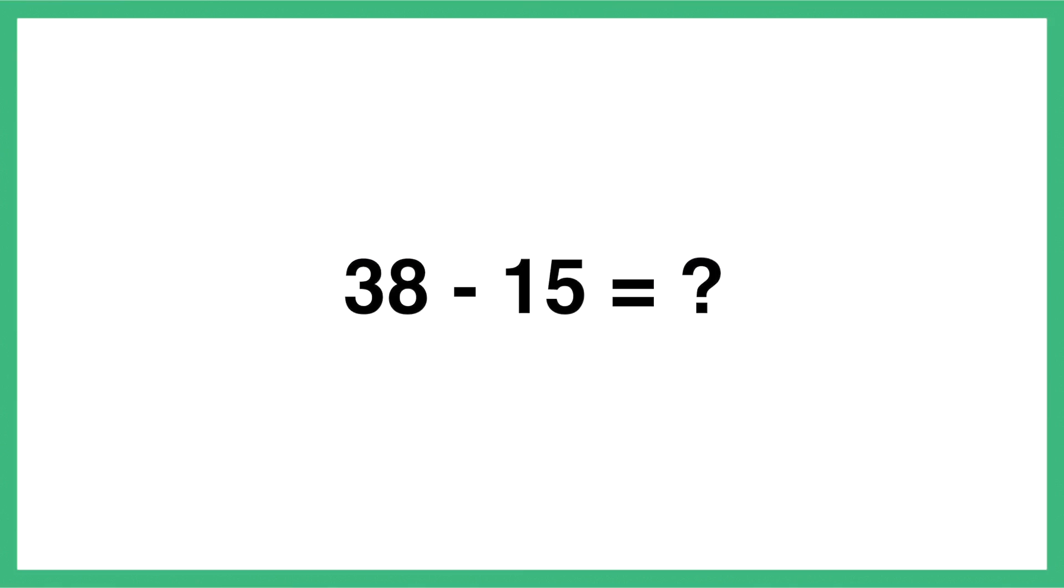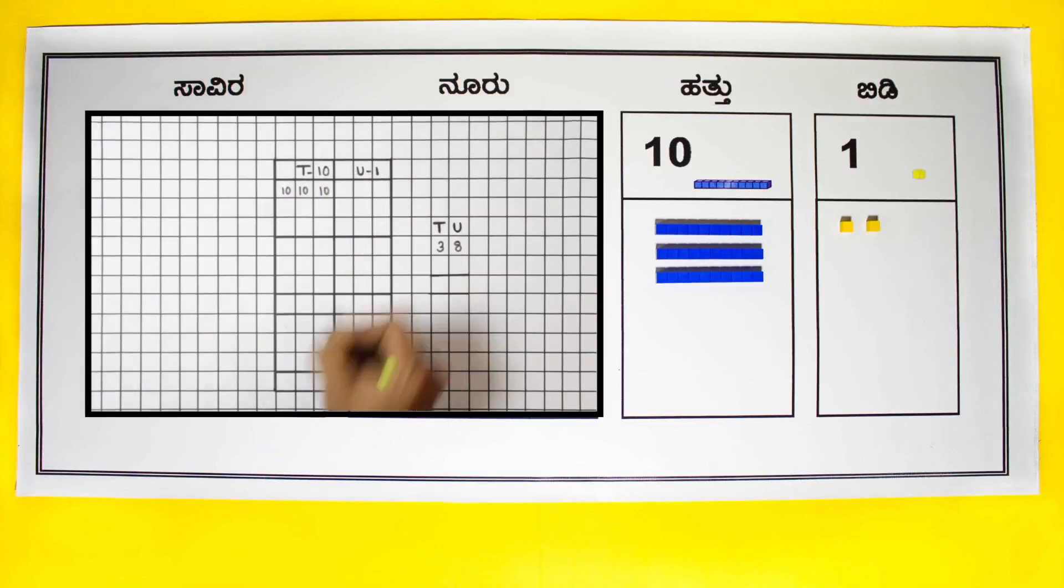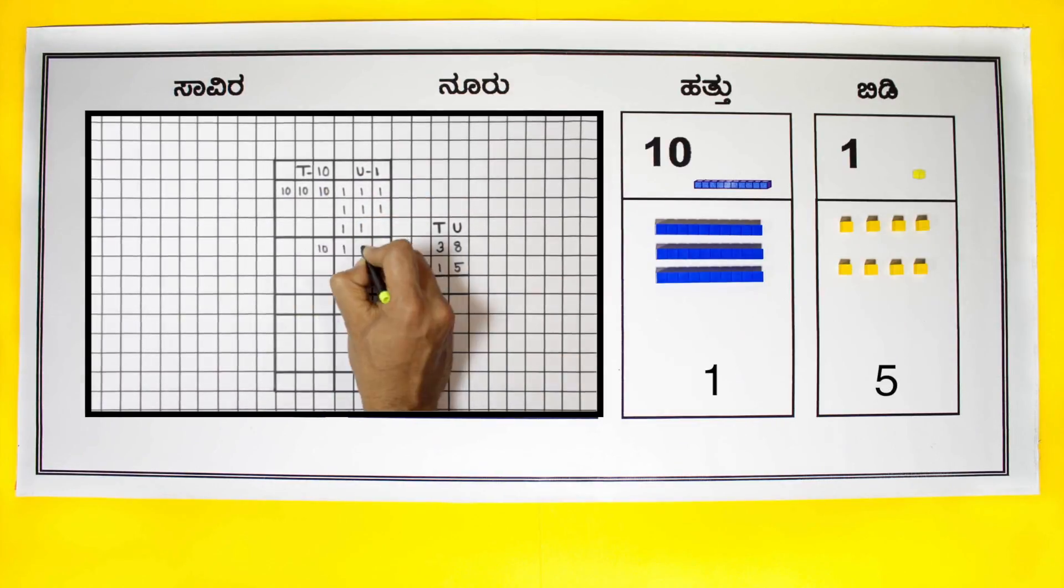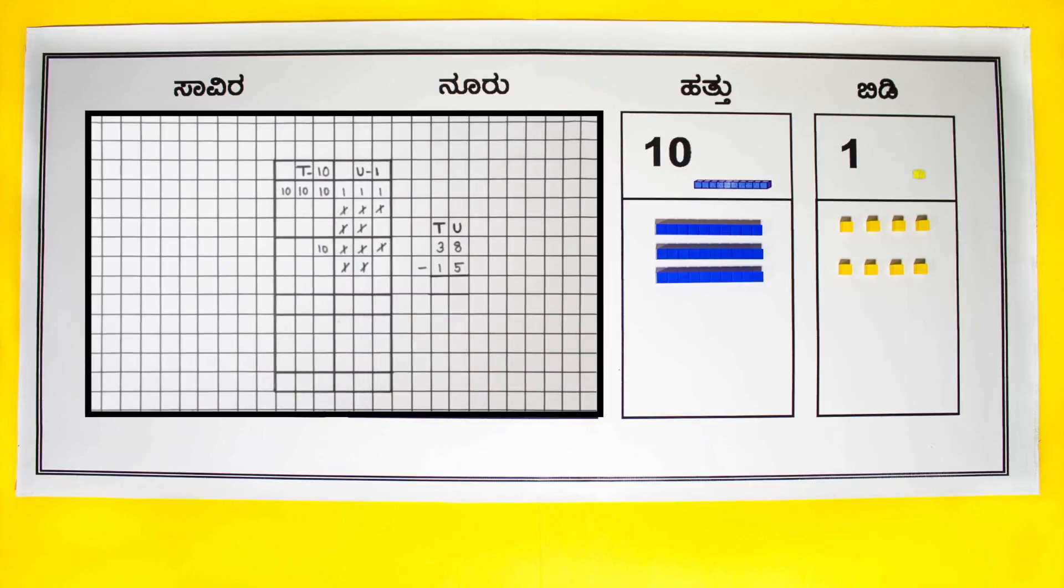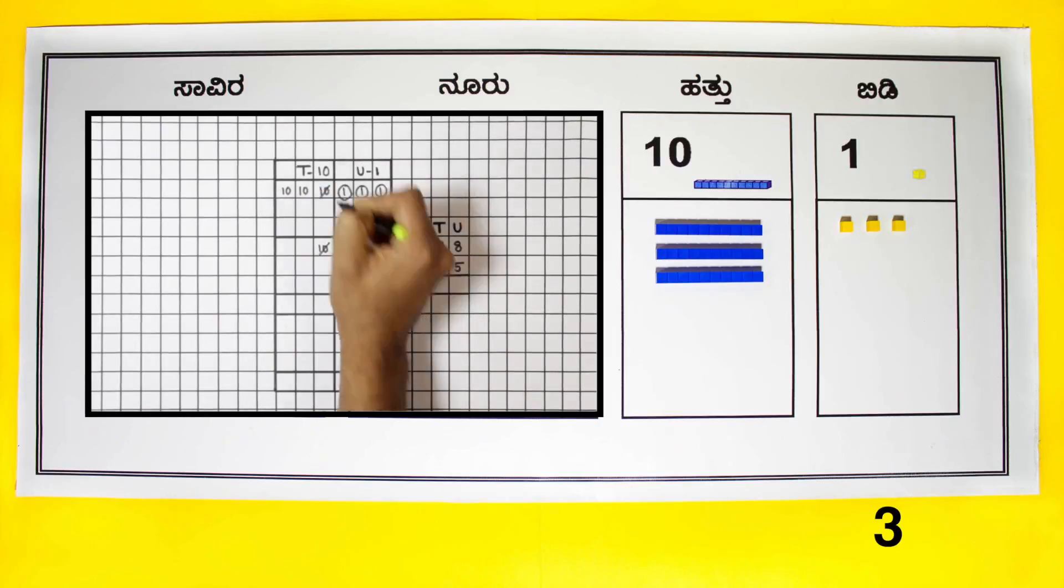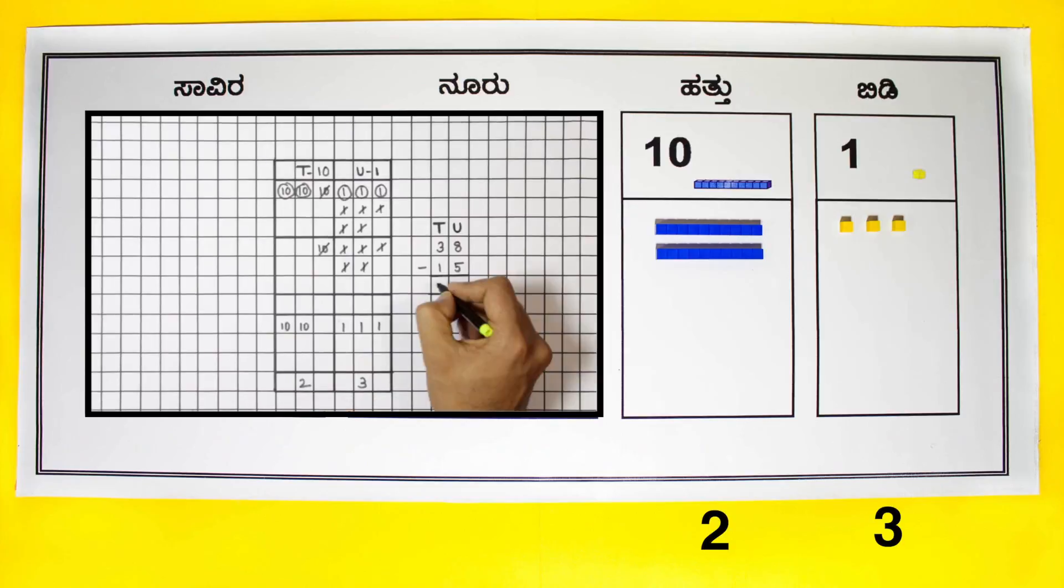Let us solve 38 minus 15. Say aloud, 38 is 3 tens and 8 units. 15 can be expressed as 1 ten and 5 units. We start the subtraction process from the units place. 8 units minus 5 units gives us 3 units. 3 tens minus 1 ten gives us 2 tens. The difference or the answer is 2 tens and 3 units or 23.